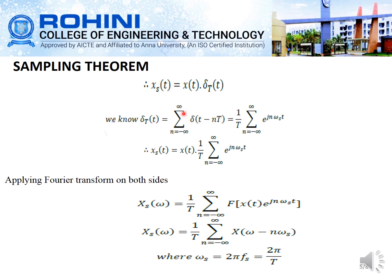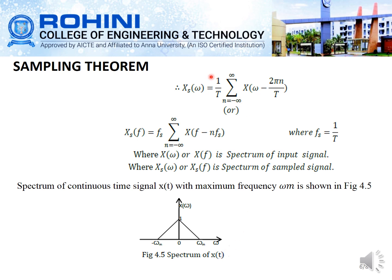Therefore, the Fourier transform for this can be written using the standard equation. After applying the Fourier transform, we get x_s(t) equal to x(t) multiplied by (1/T) times the summation from n equals minus infinity of e^(jnω_s·t). After taking the Fourier transform of both sides, we obtain the spectrum of the signal, where ω_s equals 2πfs equals 2π/T. The spectrum is given by S(ω) equal to (1/T) times the summation from n equals minus infinity to infinity of X(ω − 2nπ/T).